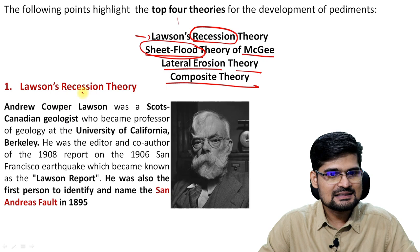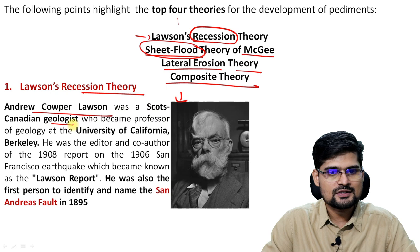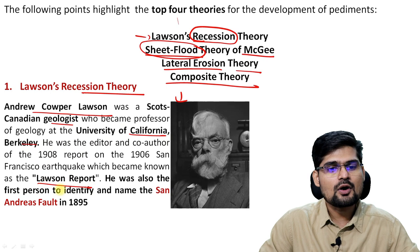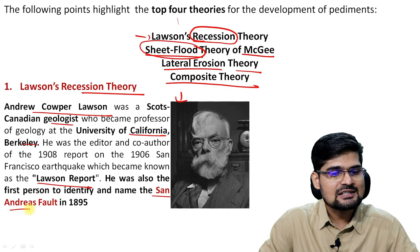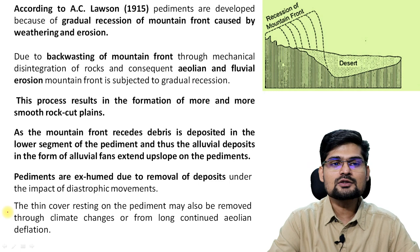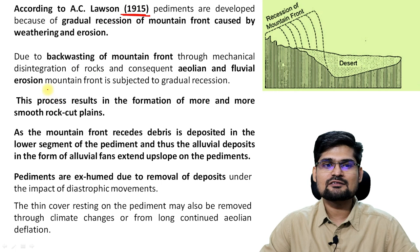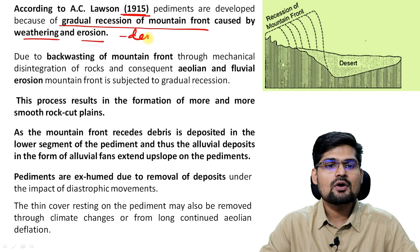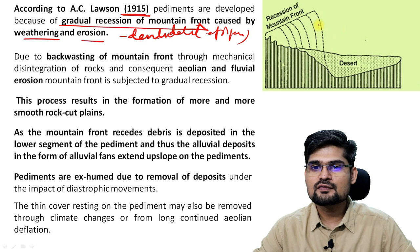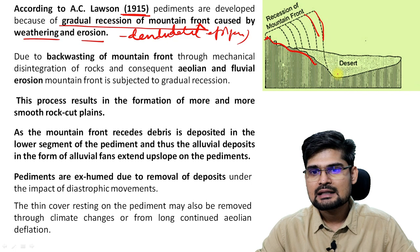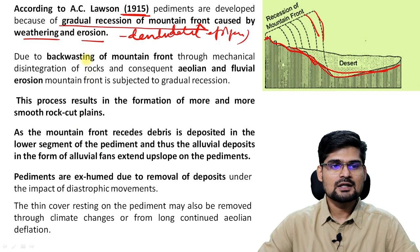Lawson's recession theory: Andrew Copper Lawson was a Scottish-Canadian geologist at the University of California, Berkeley. He made a Lawson's report discussing the deformation of these pediments, specifically studying the San Andreas Fault in 1895. According to Lawson in 1915, these pediments are developed because of gradual recession of the mountain foot caused by weathering and erosion — purely denudational, epigene processes. First the surface was here, then it went back, and gradually it eroded down — that is the development of the entire pediment.